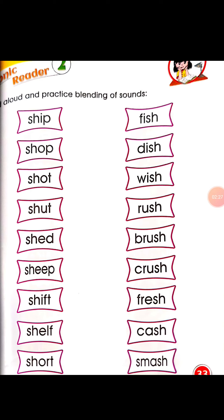Sha-up — shop. Sha-at — shot. Sha-eep — sheep. Sha-if — shift. Sha-is — fish. Da-is — dish. Wa-is — wish. Ir-ash — rush. Ba-ir-ash — brush. Ka-ir-ash — crush. Fa-ir-ash — fresh. Ka-ash — cash. Im-ash — smash. These are the blending sounds. This is your CW and also your HW.